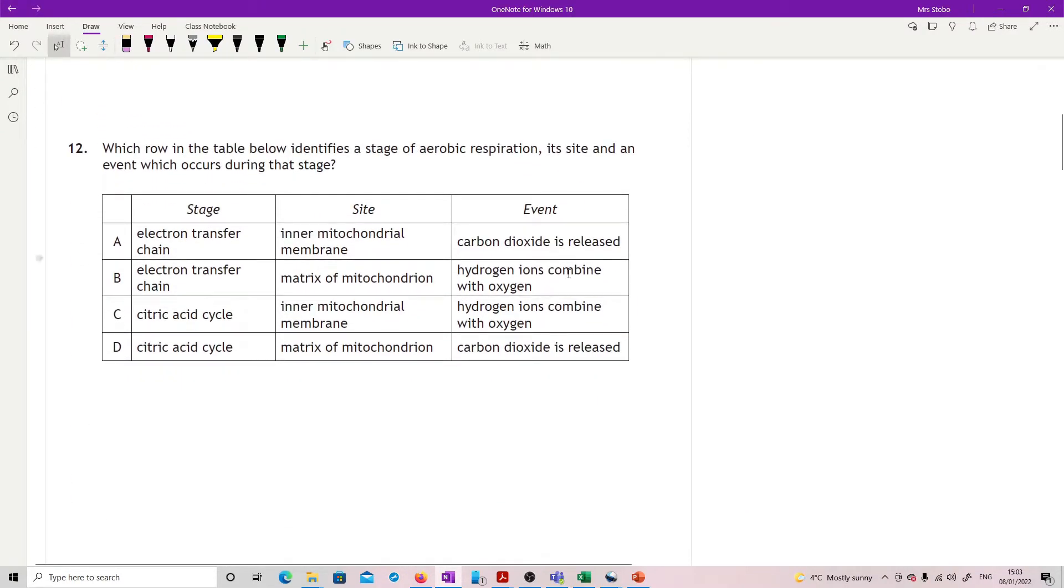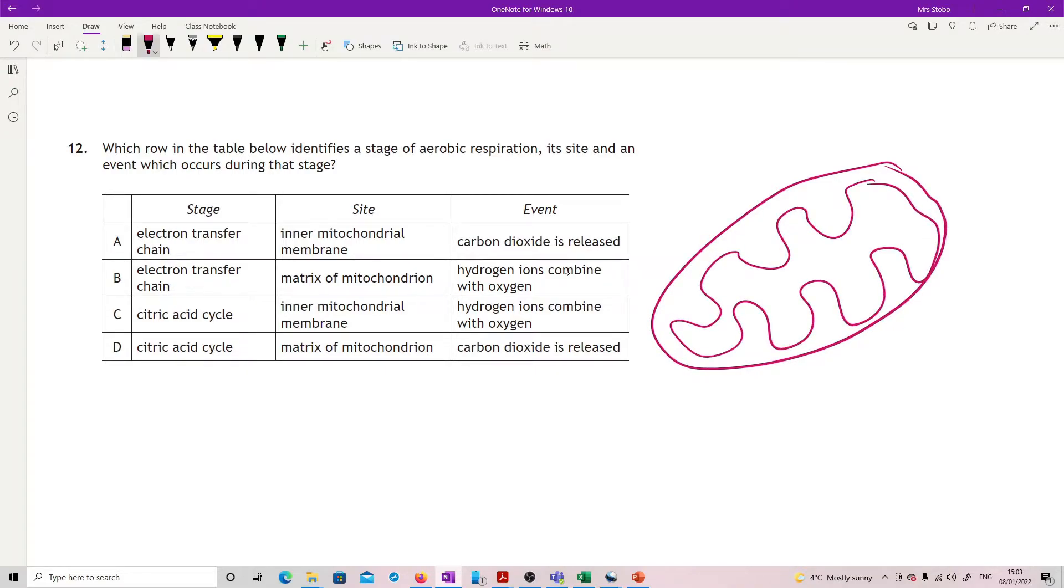Question 12: Which row in the table below identifies a stage of aerobic respiration, its site, and events which occur during that stage? We've got the citric acid cycle and the electron transport chain. You need to recognize that we have a mitochondria. Dodgy diagram of one coming up here. You should know that in here, in the central matrix, this is where we have our citric acid cycle.